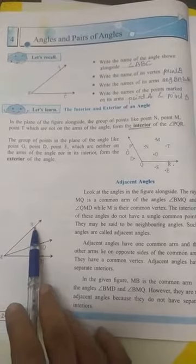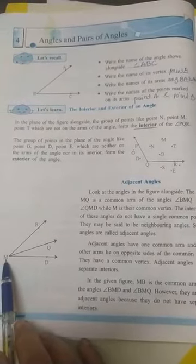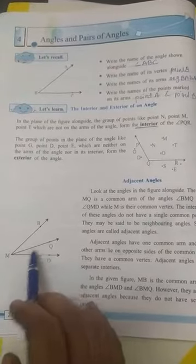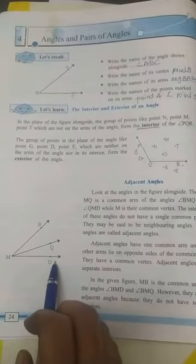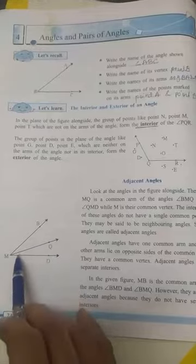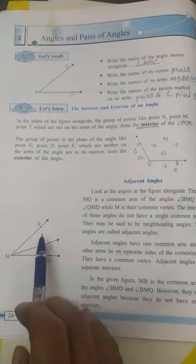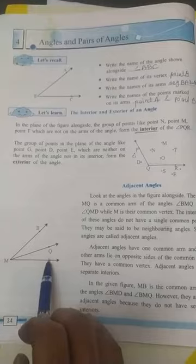Here angle BMQ is one angle. Angle QMD is another angle. Here the common arm is there and these interior parts are different for these two.